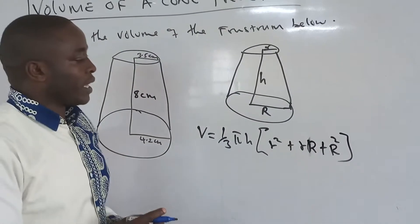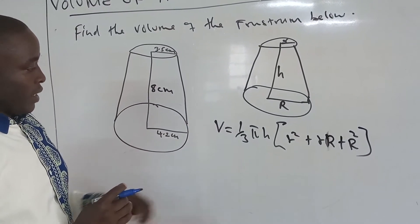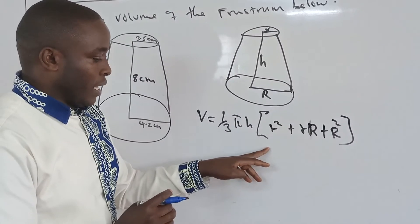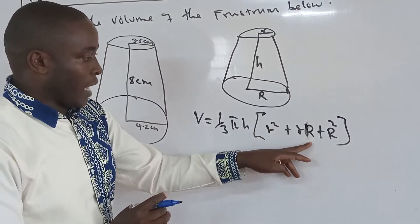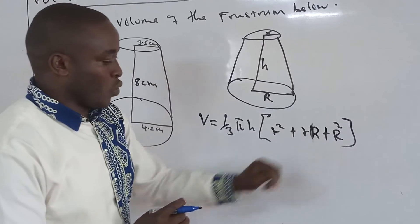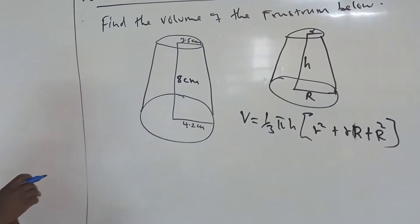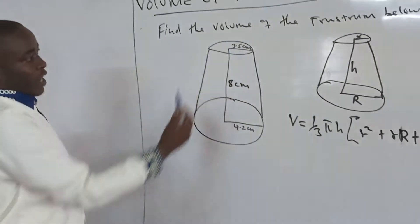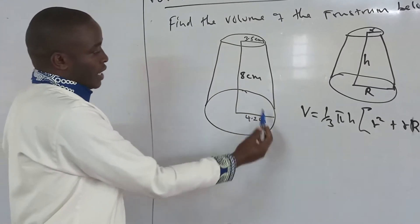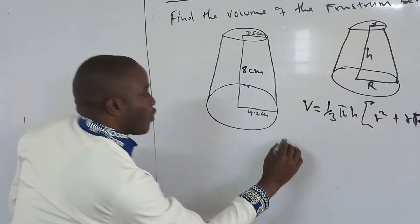If we use this formula, we get the volume directly. You can use the other method and see if you get the same answer. That is: one-third π h times (r squared plus r·R plus R squared), which gives you the volume. For instance, in this example we are given the radius of the smaller end to be 3.5, the radius of the larger end to be 4.2, and the height is 8.